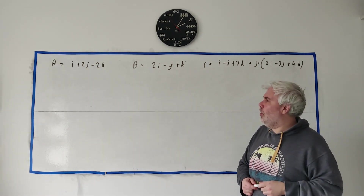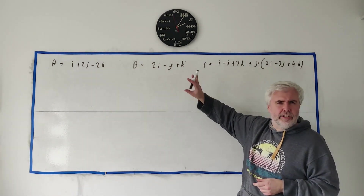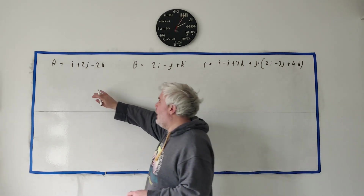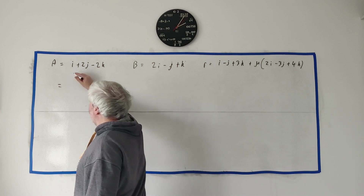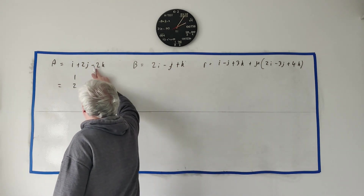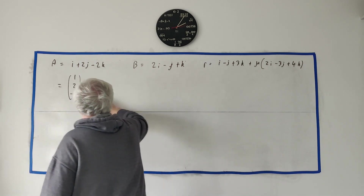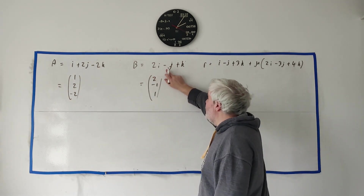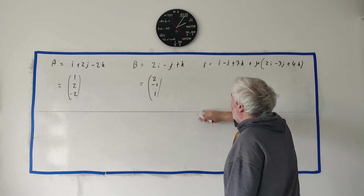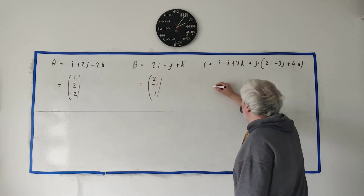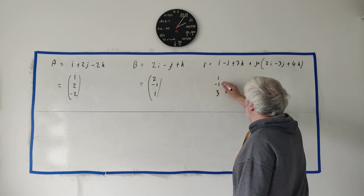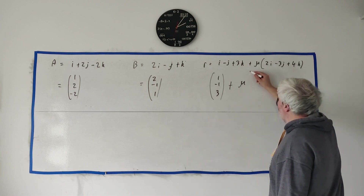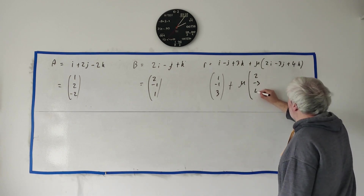The first thing I'm going to do is avoid writing I, J, and K all the time — it takes too much work. So I'm going to write the vector as a column: one I is (1), two J is (2), minus two K is (-2). I'll write that as the column (1, 2, -2). Point B I'll write as (2, -1, 1). And R I'm going to write as (1, -1, 3) plus mu times (2, -3, 4). That's how I'm going to write this.